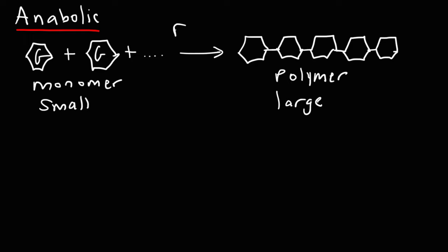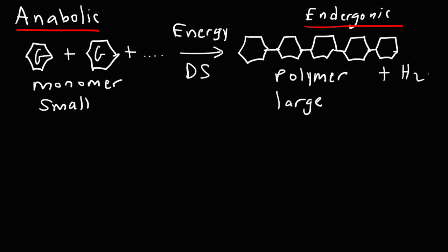Anabolic processes typically require energy, and because they require energy to make them work, this is an example of an endergonic reaction. So anabolic processes typically use up energy — they're endergonic processes and typically require ATP to make them work. This is an example of a dehydration synthesis reaction; to make this polymer, water is going to be released. Anytime you have a synthesis reaction, it's going to be an anabolic reaction.